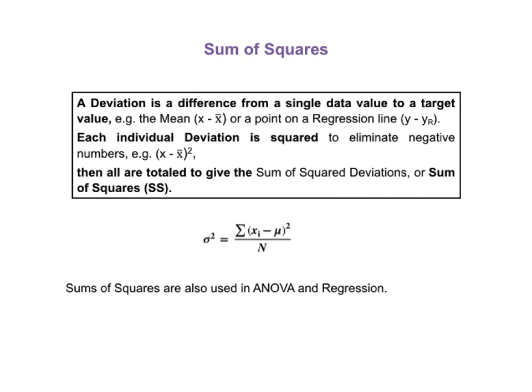Sum of squares is another concept involved in variation, and there will be a separate video on it. Briefly, sum of squares is short for sum of squared deviations. A deviation is a difference from a single data value to a specified value — which might be the mean or a point on a regression line. Each individual deviation is squared, for example (x minus x-bar) squared, to eliminate negative numbers. Then all are totaled to give the sum of squared deviations, also known as sum of squares or SS. The numerator in the variance formula is the sum of squares. There are also different types of sums of squares — ANOVA and regression each use several different types.